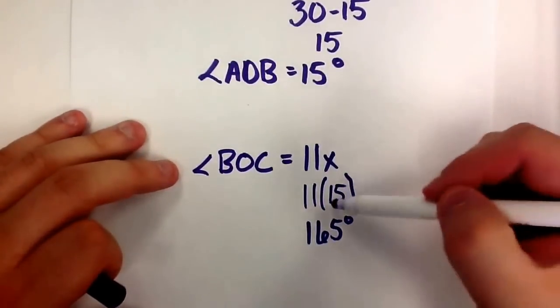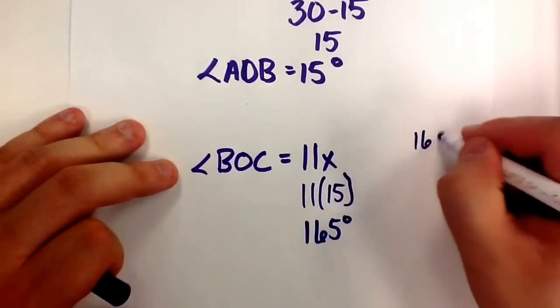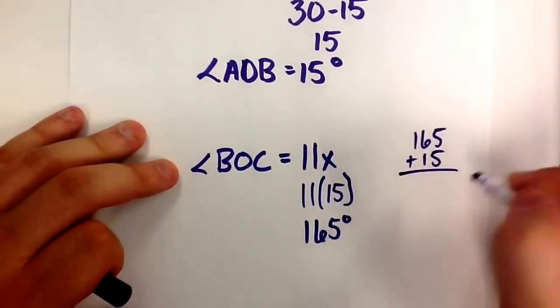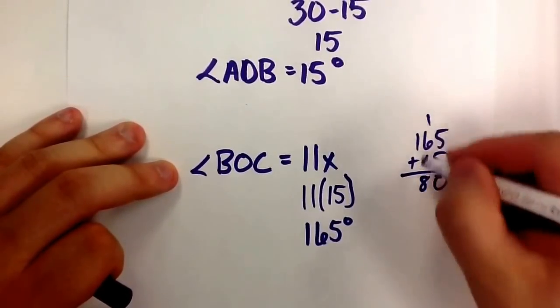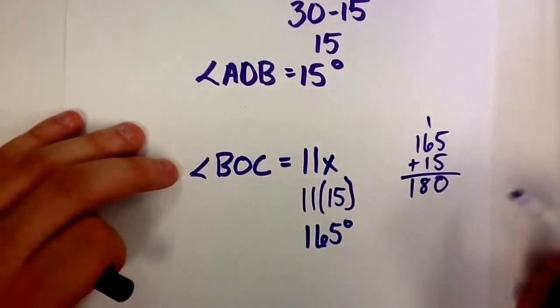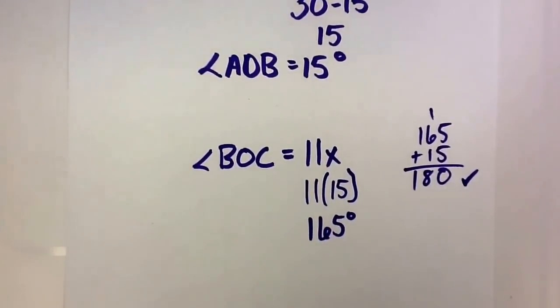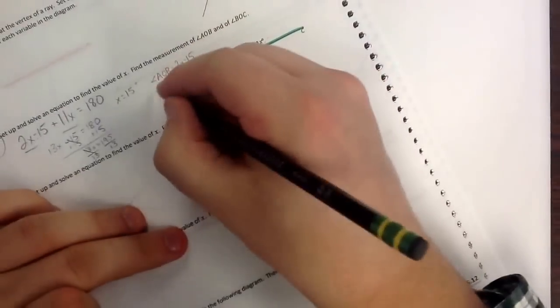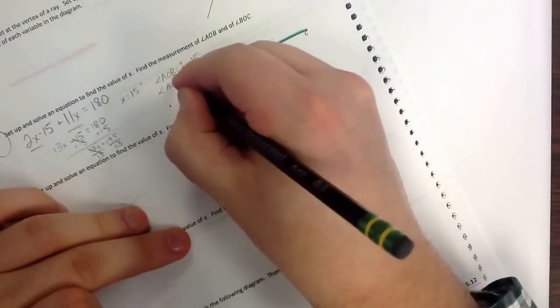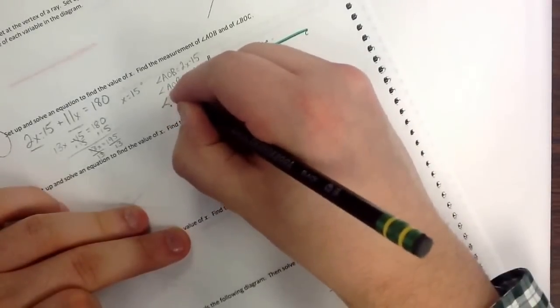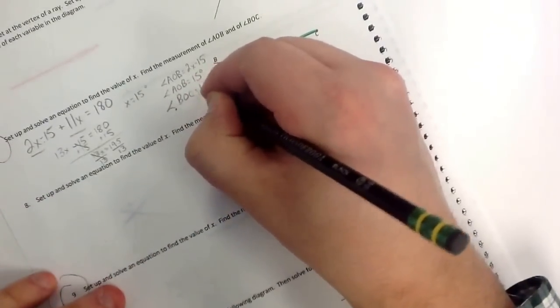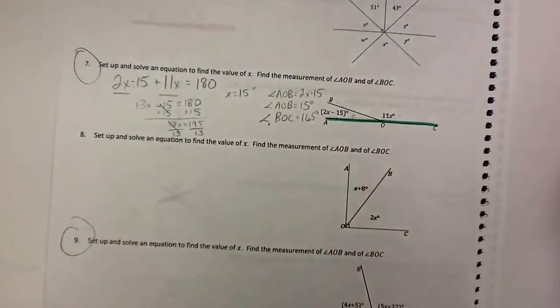I could do a quick check because I know this is a straight line: 165 plus 15 should add up to 180 — and it does. So on our paper, we're going to label that angle AOB equals 15 degrees and angle BOC equals 165 degrees. We did the work on the separate sheet.